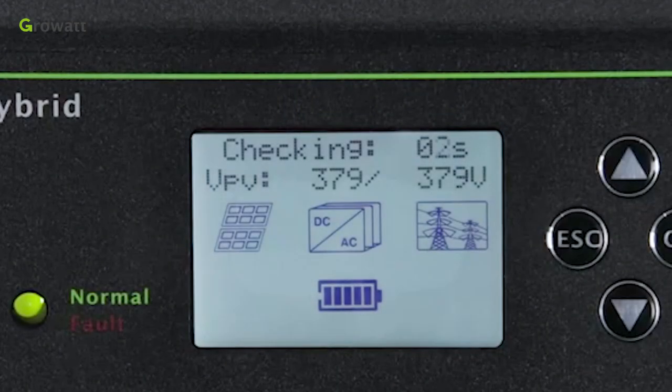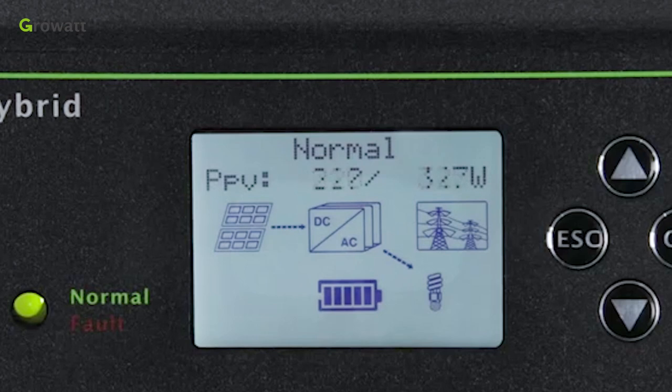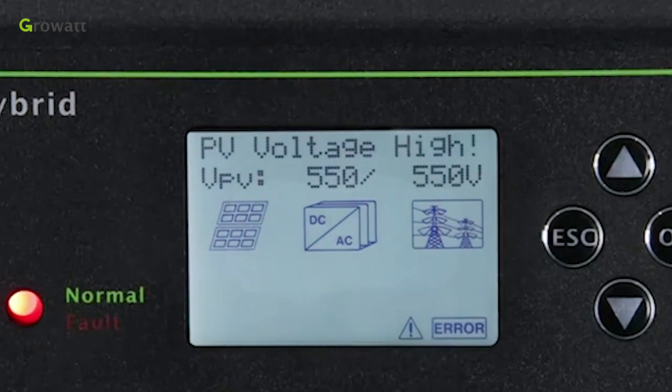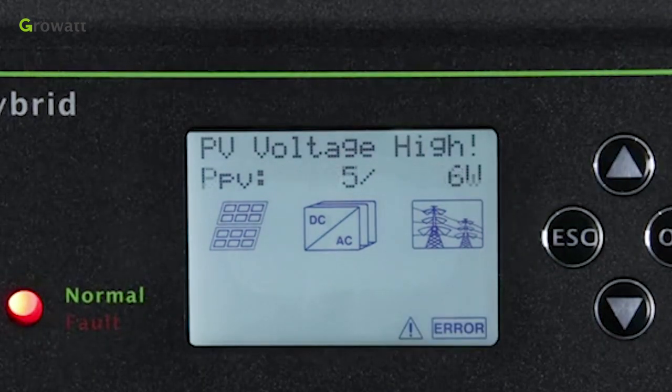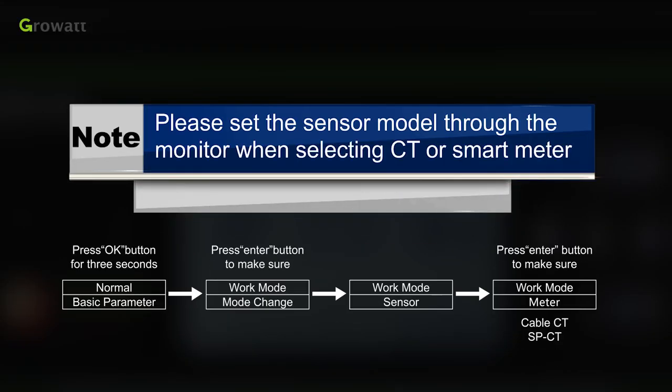After the system was powered on, if PV, grid and battery are available, the system will work on normal mode. When the SPH is on the normal mode, the screen shows normal and LED is green. If SPH didn't enter normal mode successfully, especially the LED is red, please contact Growatt Service Engineer for help. Note, please set the sensor model through the HMI when selecting CT or smart meter.